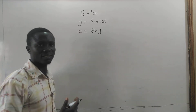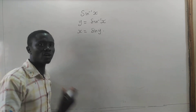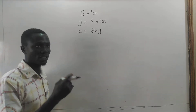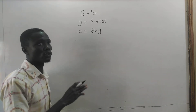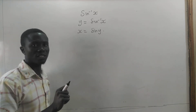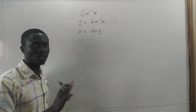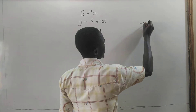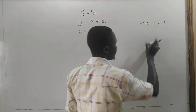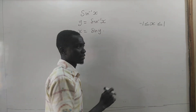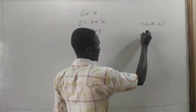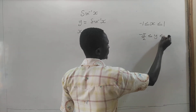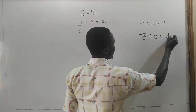We know that the sine function is a continuous function, so it is not a one-to-one function. To make it a one-to-one function so that we can get its inverse, we have to restrict its domain to negative one less than or equal to x less than or equal to positive one. This is the domain of the inverse sine function, and its range will be negative pi on 2 less than or equal to y less than or equal to pi on 2.